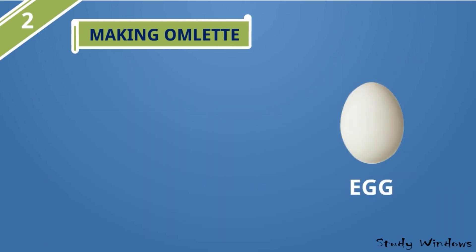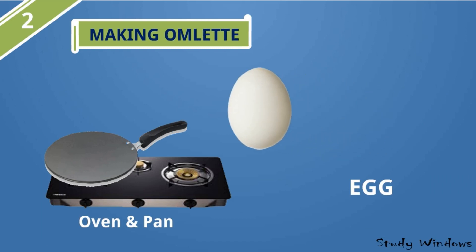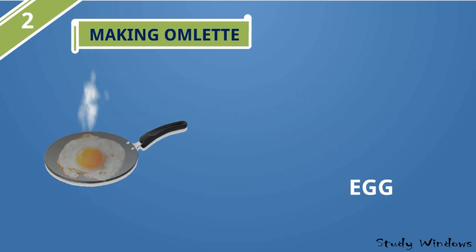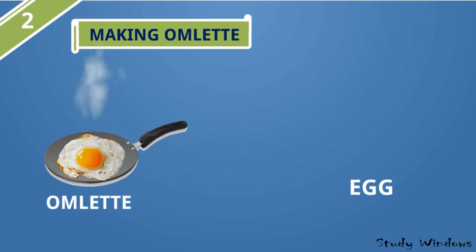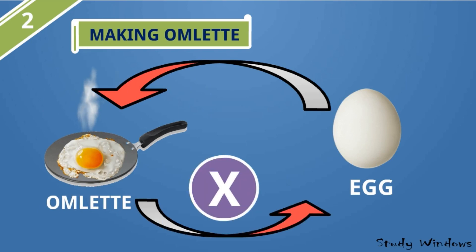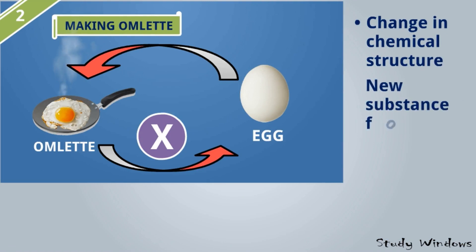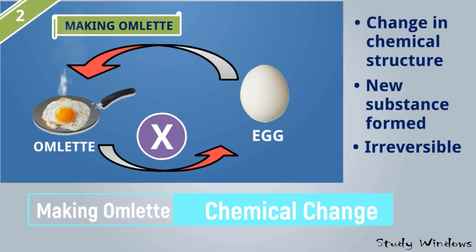Making an omelette. Take an egg, an oven, and a pan. We'll break the raw egg, cook it, and we'll get the omelette. So the raw egg has changed into an omelette. We cannot make the raw egg from the omelette. Here, a change in chemical structure has happened, a new substance is formed, and it is irreversible. So making an omelette is a chemical change.